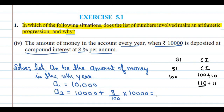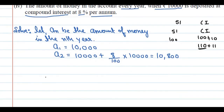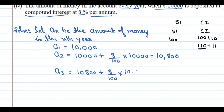The amount after the first year is 10,800. For the third year, note carefully that the interest will be calculated on the previous amount — this is where students get confused and make errors. So for the third year: 10,800 plus 8% of 10,800, which gives you 11,664 rupees.